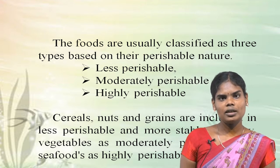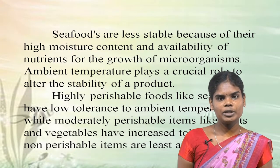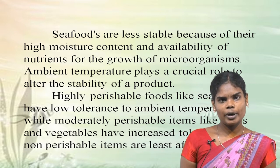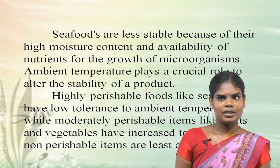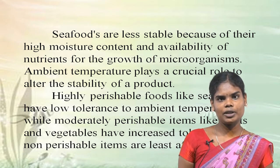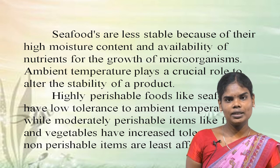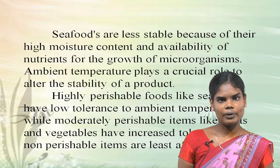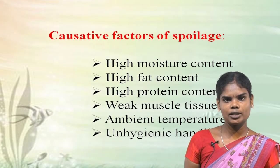Cereals, nuts and grains are less perishable food items and belong to the more stable category. Moderately perishable food items are fruits and vegetables. Seafoods are highly perishable food items because seafood have high moisture content and availability of nutrients for the growth of microorganisms. Ambient temperature plays a crucial role in altering the stability of a product. Seafood has low tolerance to ambient temperature, while moderately perishable food items like vegetables and fruits are highly resistant to ambient temperature, and non-perishable food items are least affected.